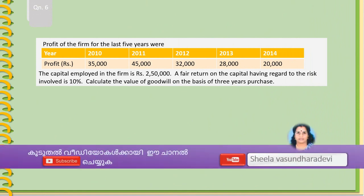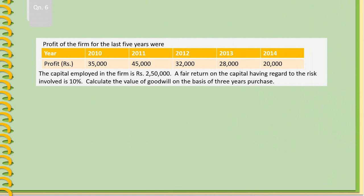Question 6: Profits of the firm for the last 5 years were Rs. 35,000, Rs. 48,000, Rs. 32,000, Rs. 28,000, and Rs. 20,000. The capital employed in the firm is Rs. 2,50,000. A fair return on the capital, having regard to the risk involved, is 10%. Calculate the value of goodwill on the basis of 3 years purchase.